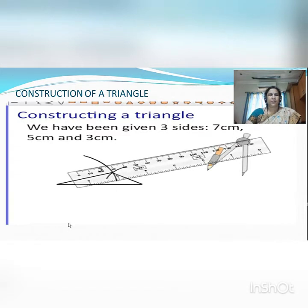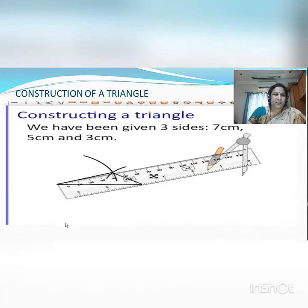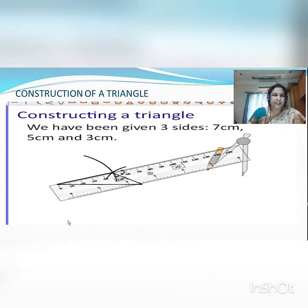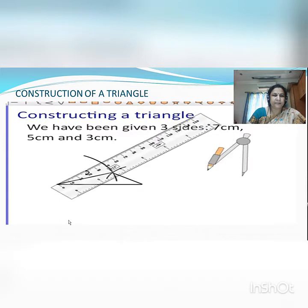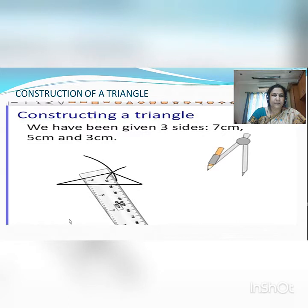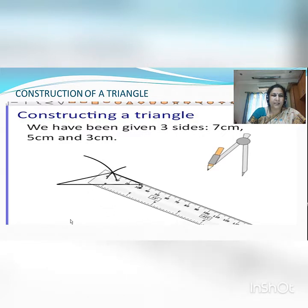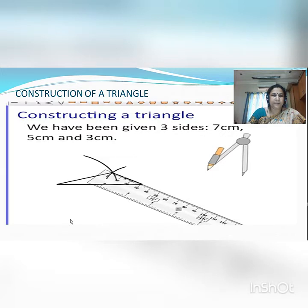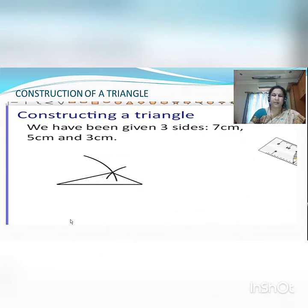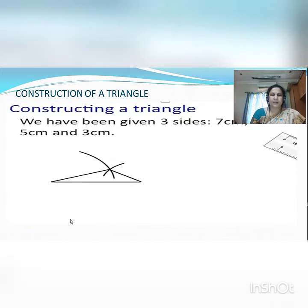You can check with the scale. This side is exactly 5 cm, and the other side is exactly 3 cm. This way you can draw a triangle with given measures.